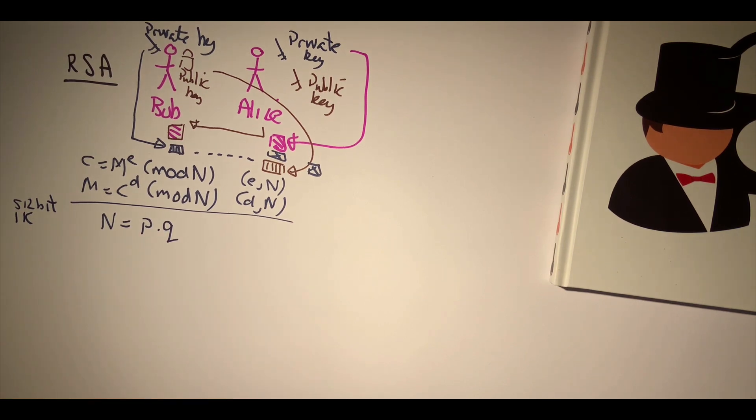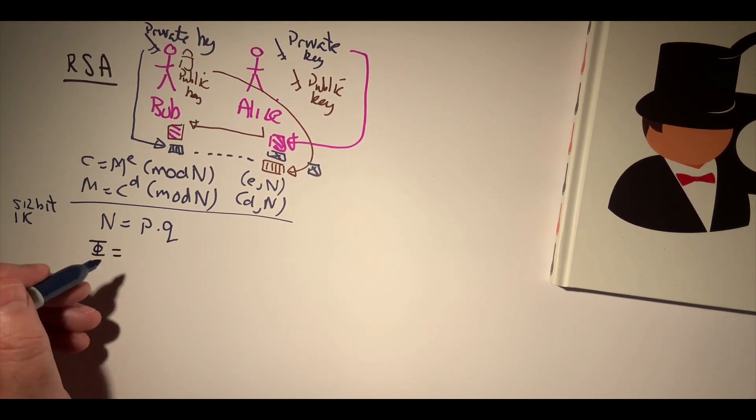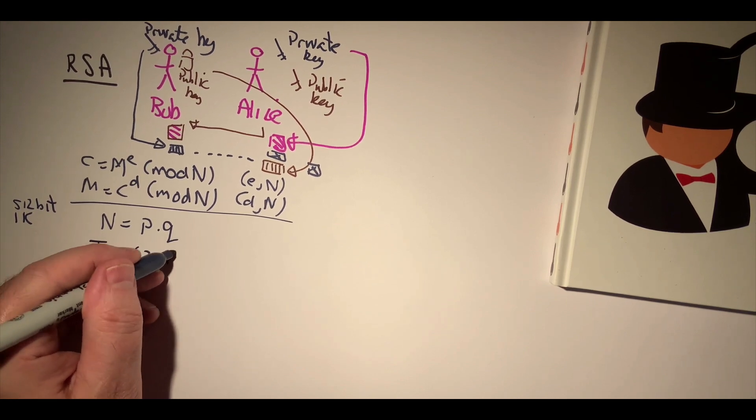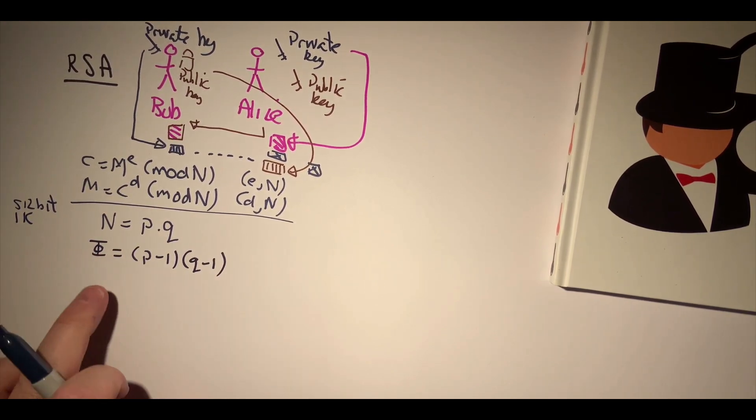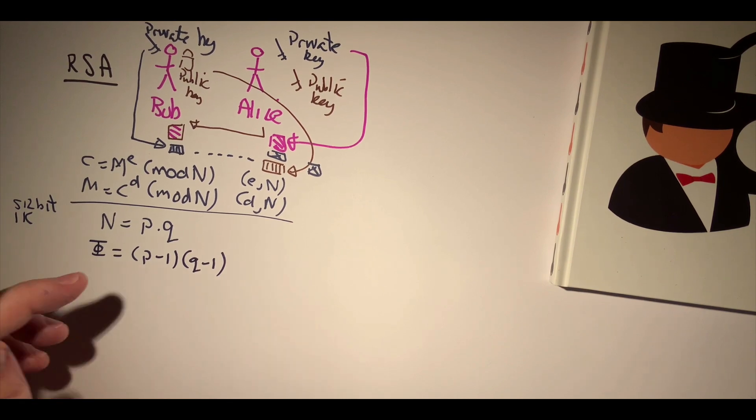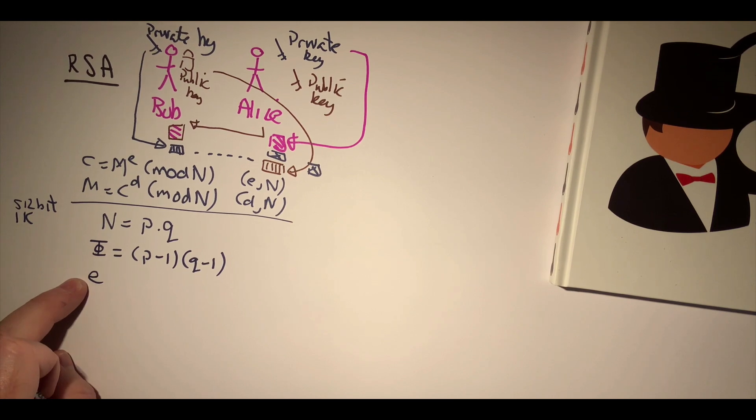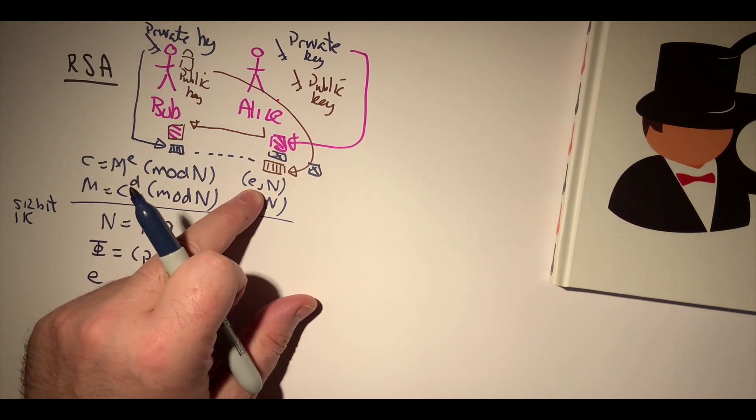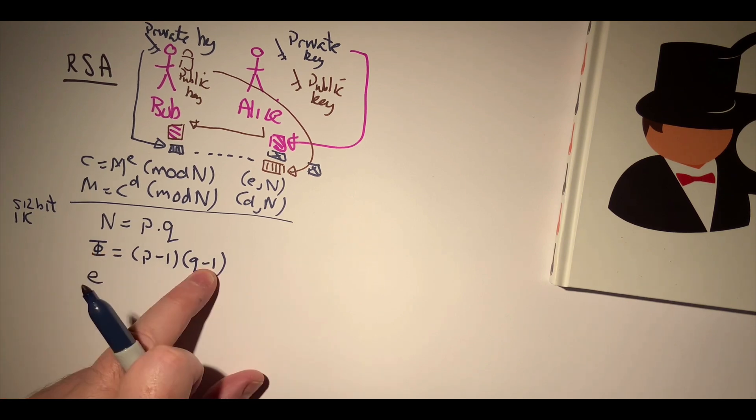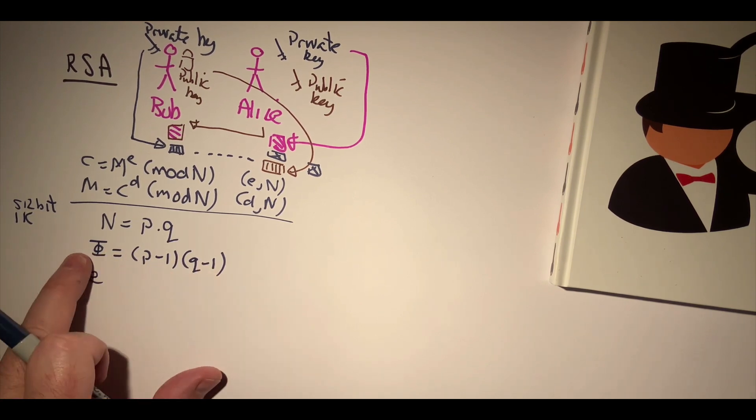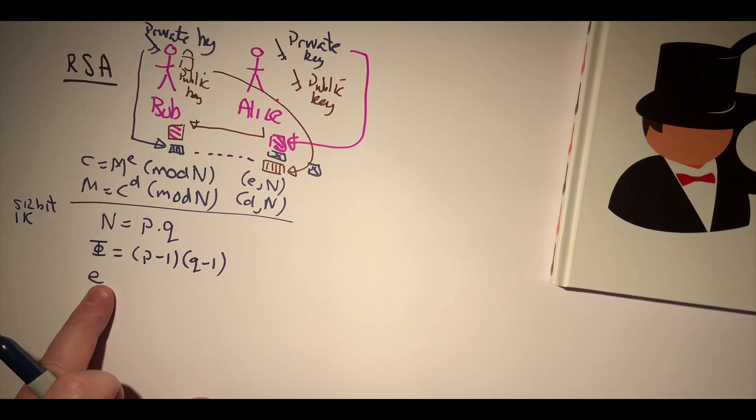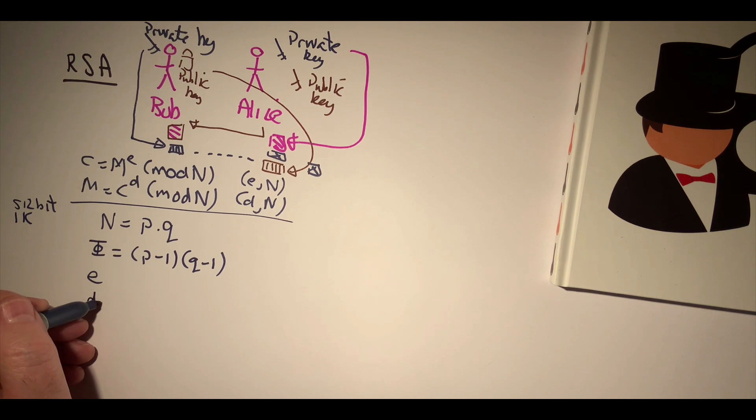Okay, so once we have this, we now calculate a value of phi, and phi is equal to p minus 1 times q minus 1. Then what we need to do is to make sure that e, the encryption key value, does not share a value of a factor with phi. So we select that, and then once we have that we need to determine the value of d.